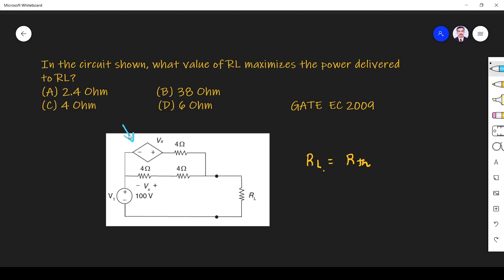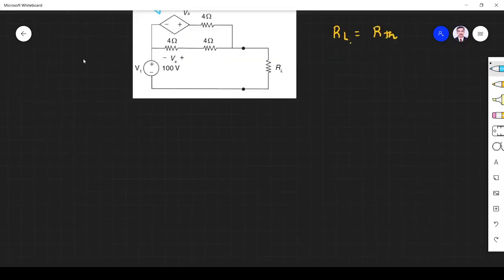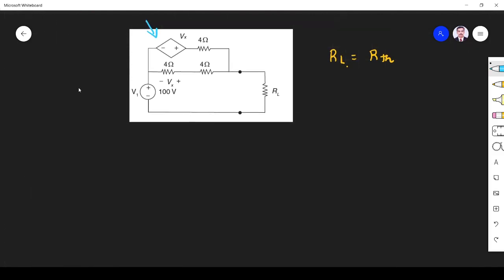So whenever we have a dependent source, what we have to do is first we have to remove the independent source. Since it is a voltage source, I remove it by shorting it. And the other elements will be as they are.